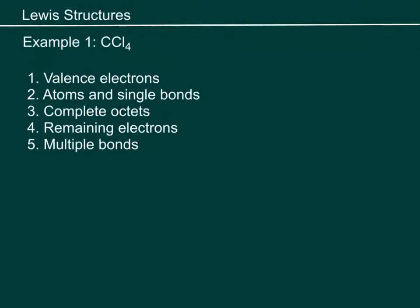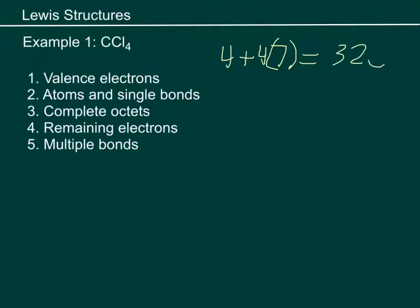So the first one, CCl₄. I need to find the valence electrons. Carbon has four, and each chlorine has seven, and there's four of them, so four times seven. That's going to be 28, and we're going to equal 32 electrons total.